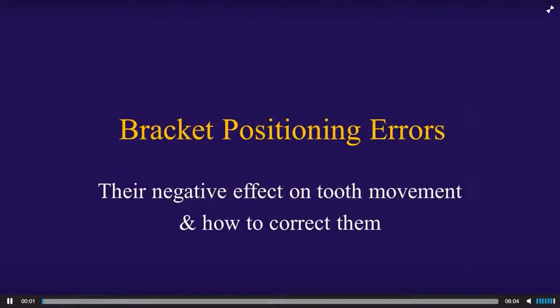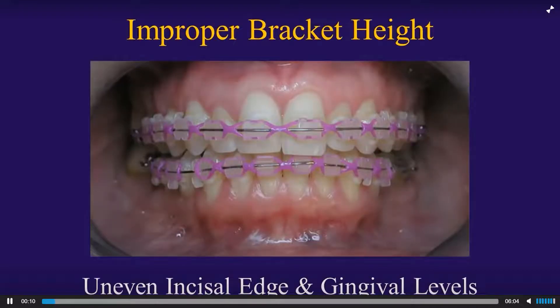Let's talk about bracket positioning errors and the negative effect they can have on tooth movement. Improper bracket height — if your bracket heights are set wrong, you're going to have both uneven incisal edges and gingival levels.